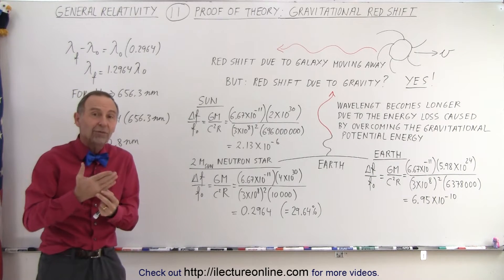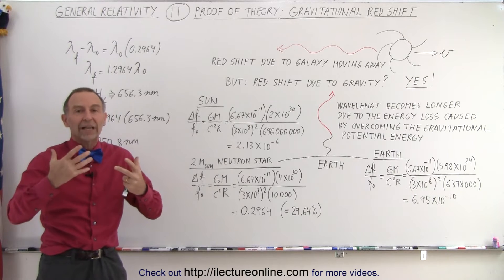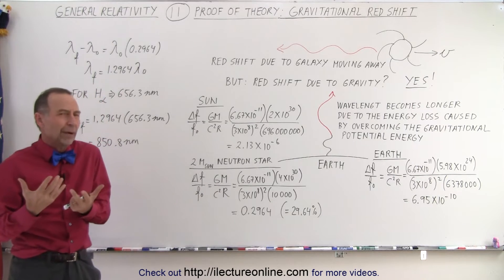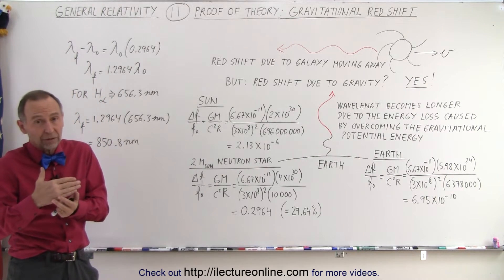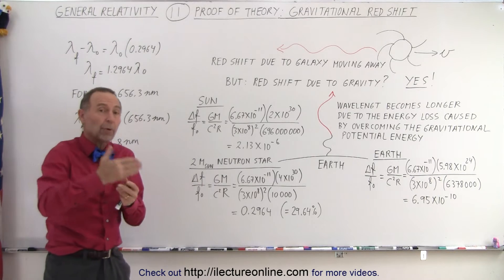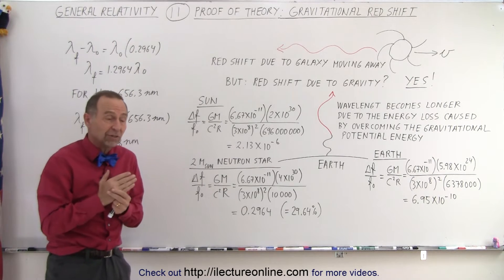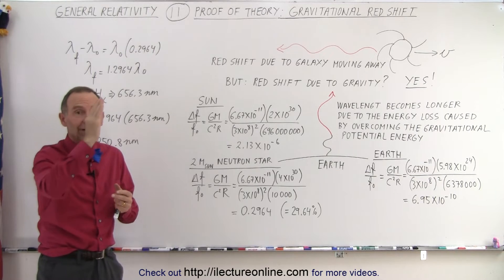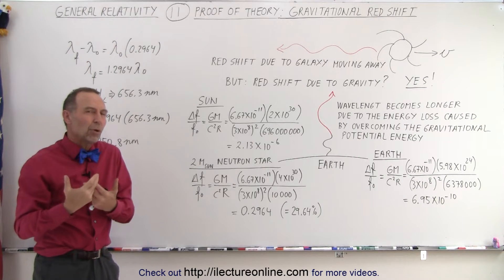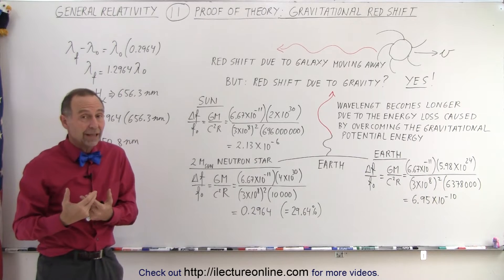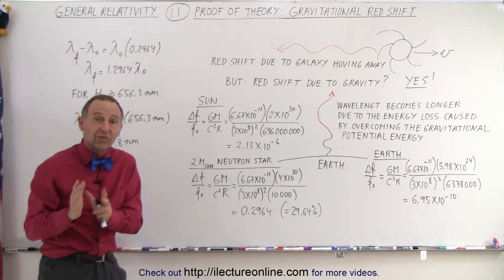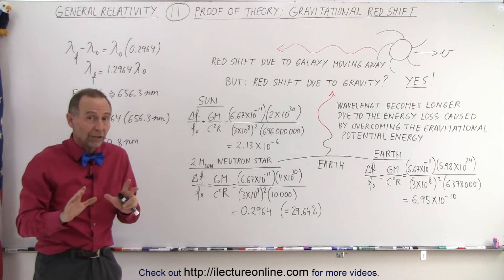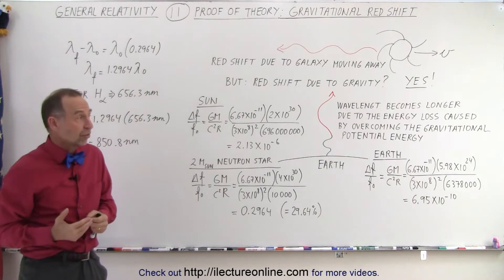The way it does that is by giving up some of its wavelength or some of its frequency, because the energy of a photon, the energy of light, is directly proportional to the frequency of its oscillation. So as light tries to get away from the Earth, it starts to oscillate slower, and that's what we know as the gravitational redshift. We have actually done experiments and measured that shift, so there's no question that we can measure that it exists.